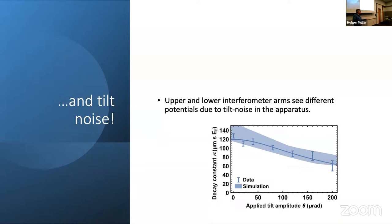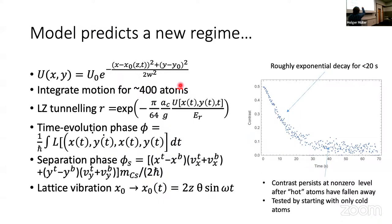So the upper and lower interferometer arms see different potentials due to tilt noise. And while we couldn't make the tilt noise lower in our apparatus, we could make it worse and show that at least that's reasonable as an influence. This is the only equation-laden slide. So we made a Monte Carlo model where we propagate 400 atoms through the lattice potential. The lattice potential is mostly Gaussian, but has this time-dependent and z-position-dependent wiggle. Landau-Zener tunneling between lattice sites is accounted for. We calculate the time evolution phase by integrating the Lagrangian. Also, when the two wave packets get put together, but they are not exactly overlapped, there's a separation phase, which is just a fancy restated way of de Broglie's matter wave p equals h bar k equation.